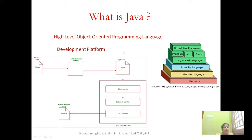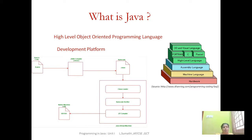Bytecode is very important because it makes Java platform-independent. This bytecode is platform-independent, which makes Java write-once and run-anywhere. If you write Java on one system with a certain processor architecture and operating system, you can run it on another system with a different operating system and different processor architecture — and that is because of this bytecode.